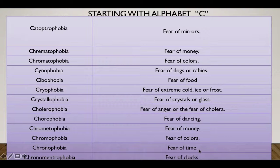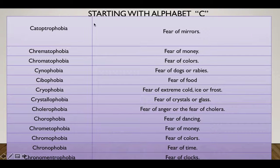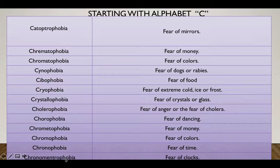Chronophobia — fear of time. You may have read about chronological order — how we arrange events in sequence, like A, B, C, D alphabetically — that is chronological order. So 'chrono' is related to time, hence fear of time. Chronomtrophobia — fear of clocks. You can remember this as it is also very long in length, and it relates to clocks.